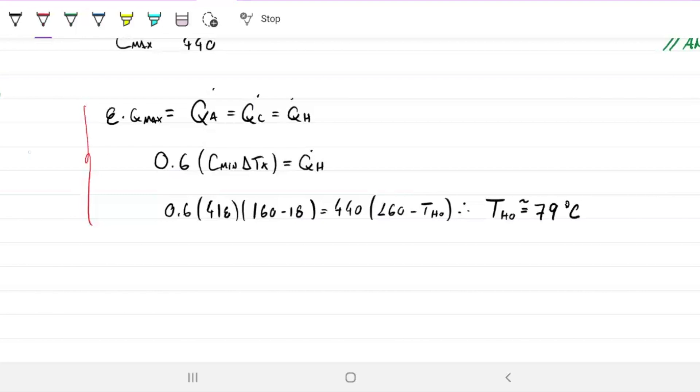We can do the exact same thing for cold. So 35,600 equals 418 times T cold out minus 18. The units go away so our math is actually simple.